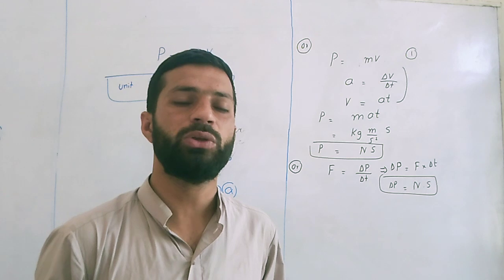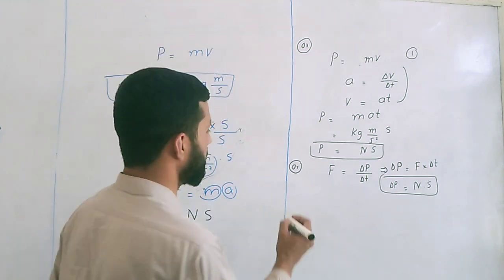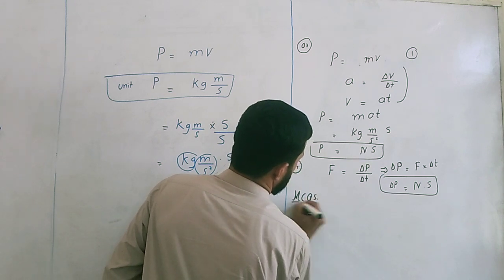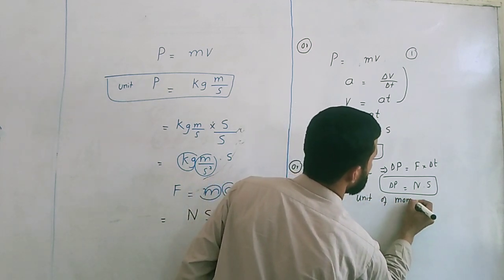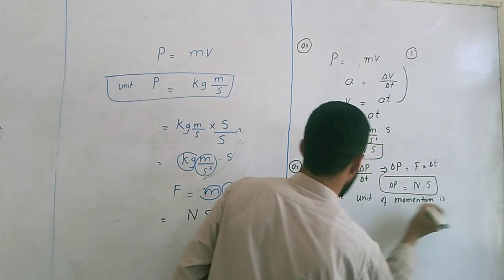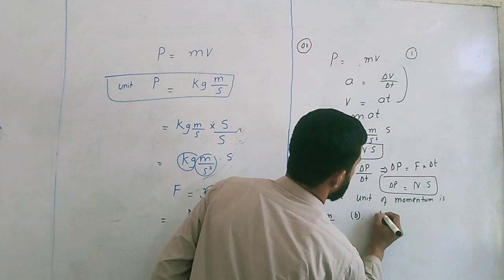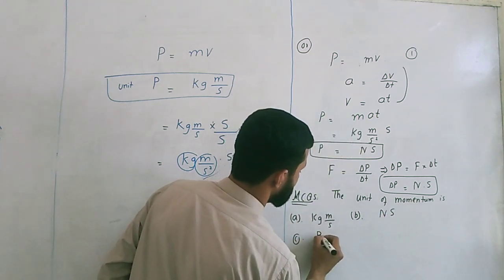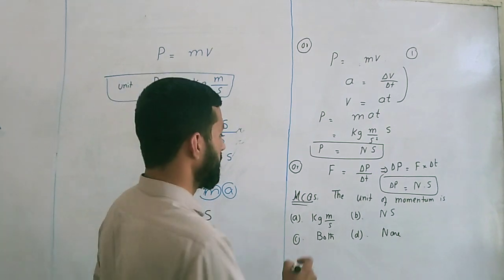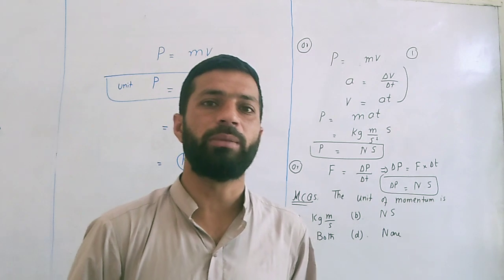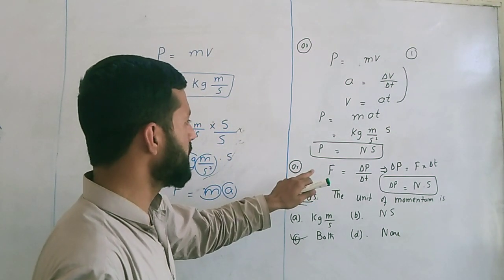If this comes in MCQs — it often comes in MCQs — that the unit of linear momentum: option A would be kilogram meter per second, option B is Newton second, option C is both, and option D is none. So you have to go for both, because as already proved, the unit of momentum is kilogram meter per second and it is also Newton second.